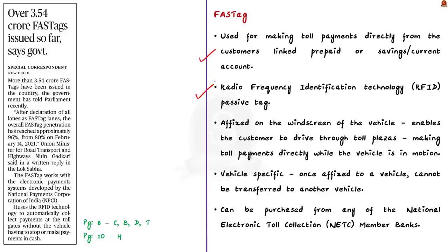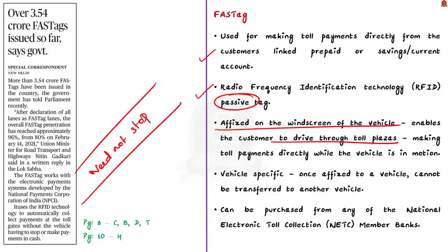It is said as passive tag because FASTag works with no internal power source. Rather they are powered by electromagnetic energy transmitted from an RFID reader. If you take an active RFID system, the RFID tag works with an internal power source. This is the difference between active and passive tag. This FASTag is affixed on the windscreen of the vehicle, enabling customers to drive through toll plazas without stopping for any toll payments. The toll fare is directly deducted from the linked account. Therefore FASTag enables making toll payments directly while the vehicle is in motion.